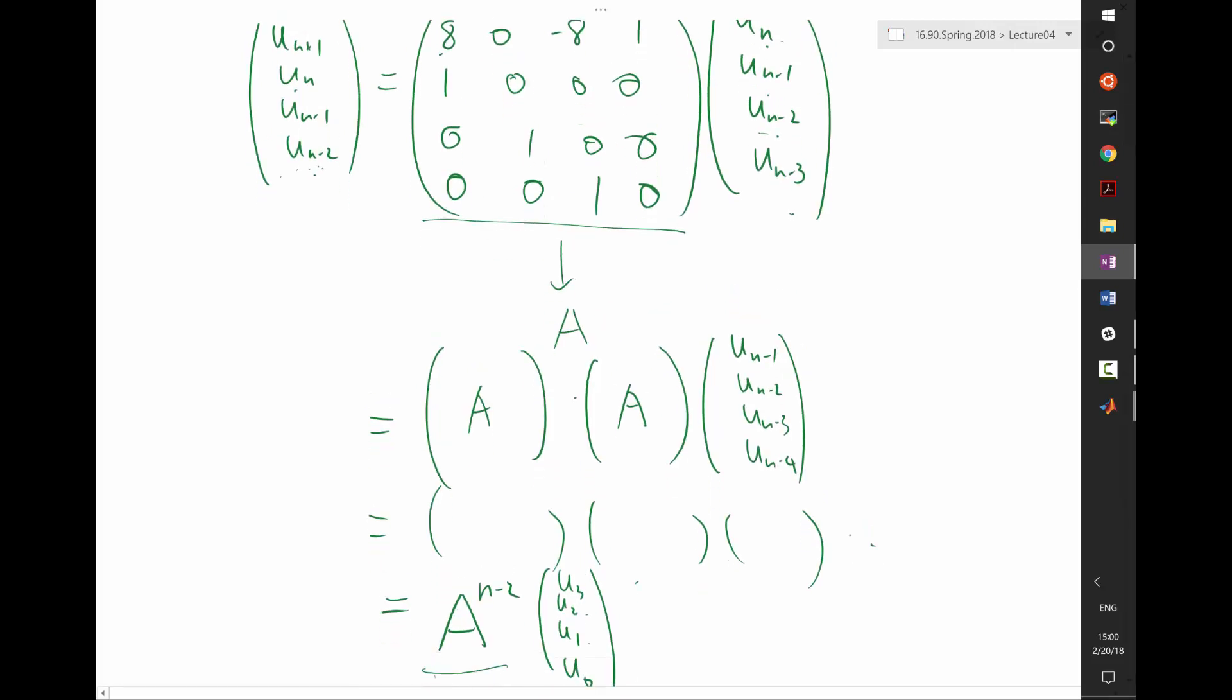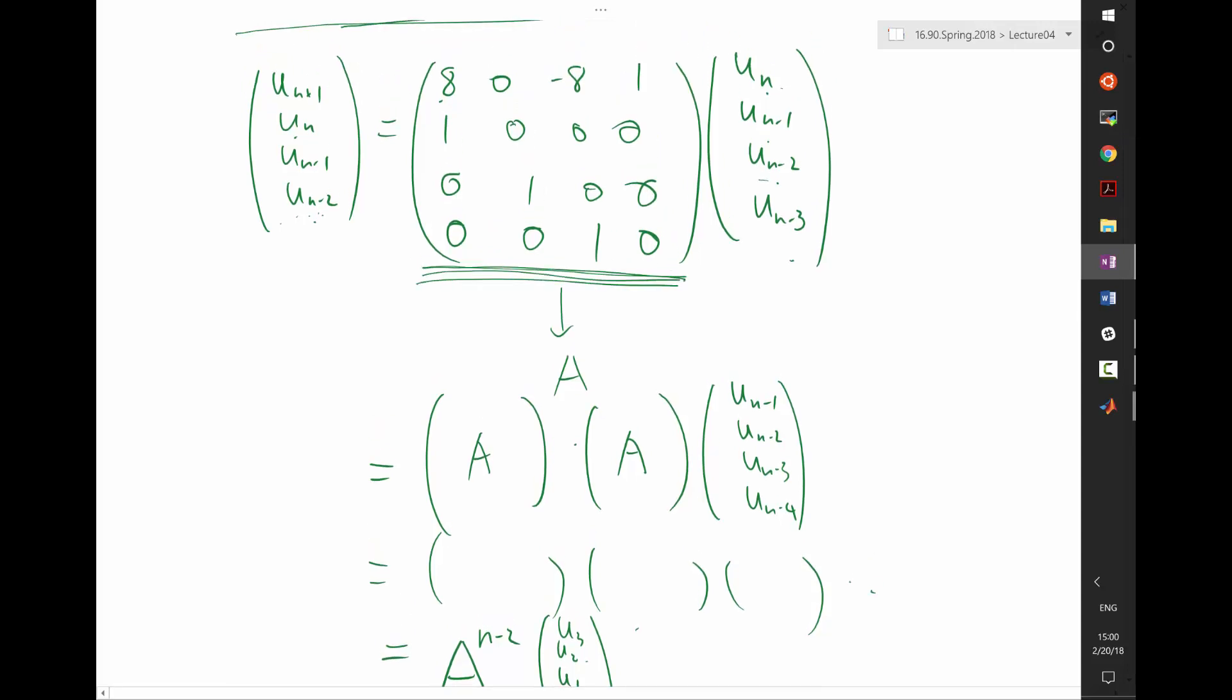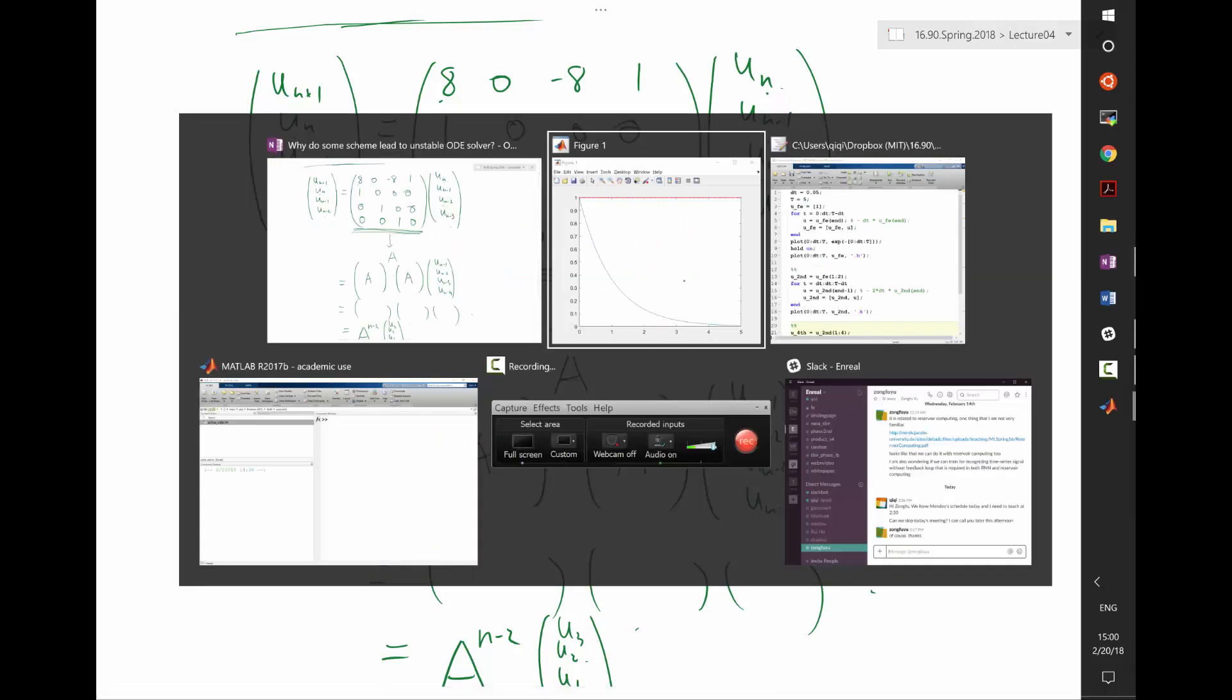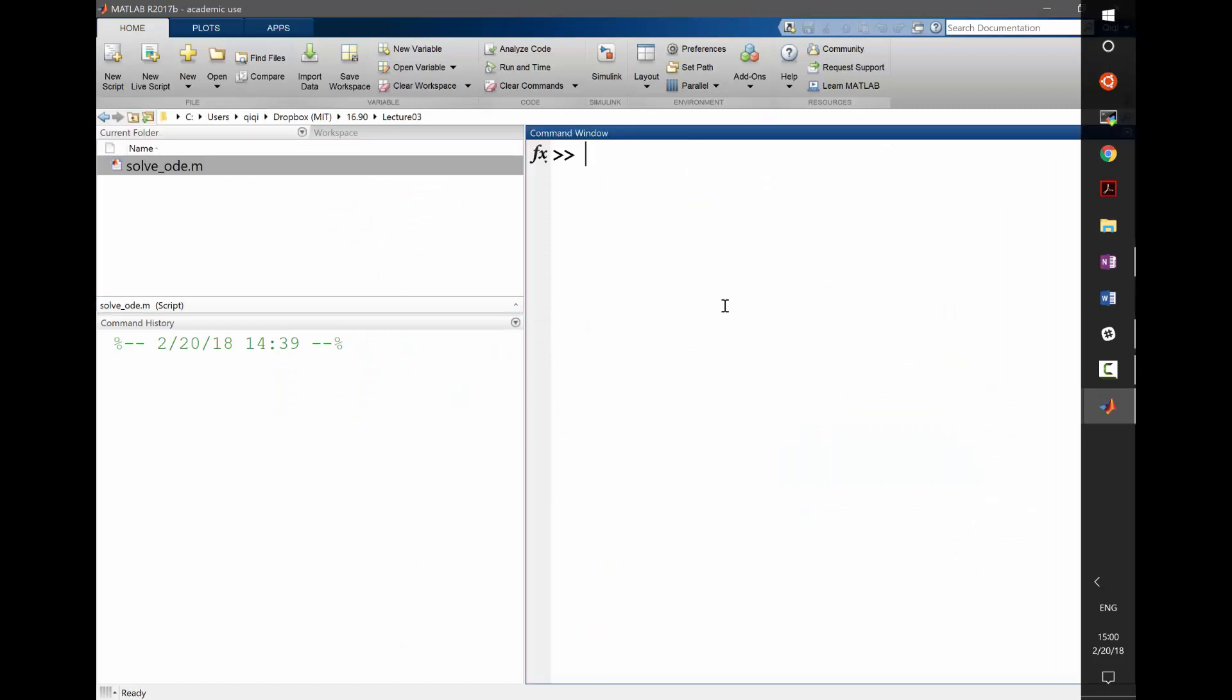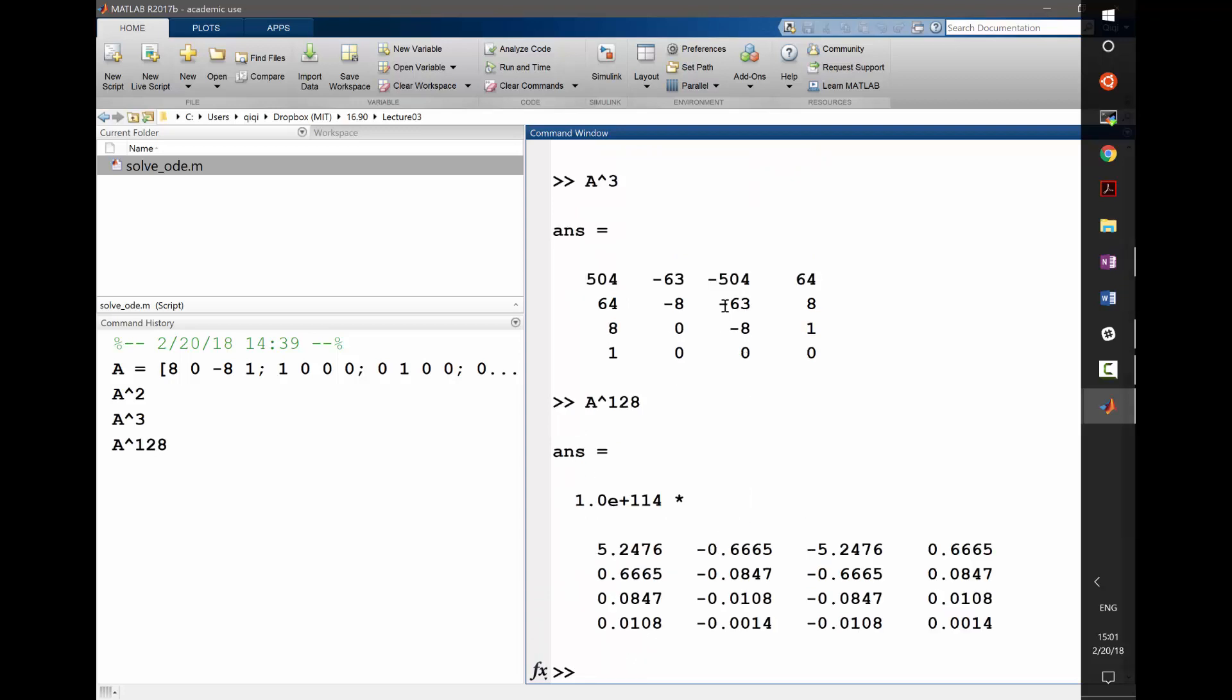All right. So basically, the stability of this scheme lies on the stability of repeated multiplication of this matrix. So let's construct the matrix back in MATLAB. My stability matrix A, it's actually called stability matrix, is 8, 0, -8, 1, and 1, 0, 0, 0, 0, 1, 0, 0, 0, 0, 1, 0. Okay, that's my matrix. In MATLAB, I actually do A squared, right? And you can see A squared actually contains some pretty big entries already. I can do A cubed, it's bigger. I can do A to the 128th, it's already 10 to the 114th. So that's a good explanation of why we get an unstable scheme.